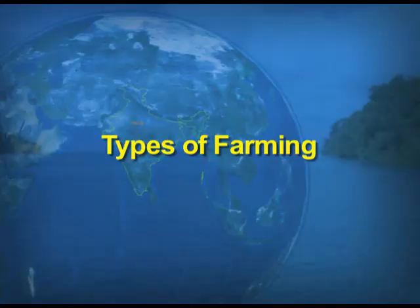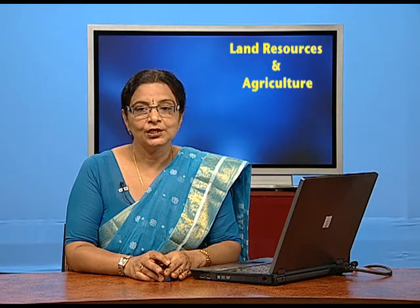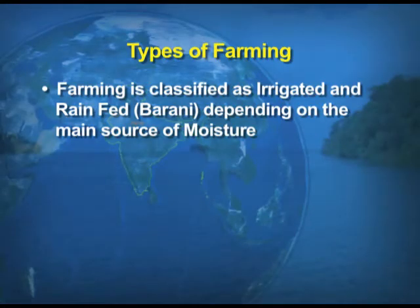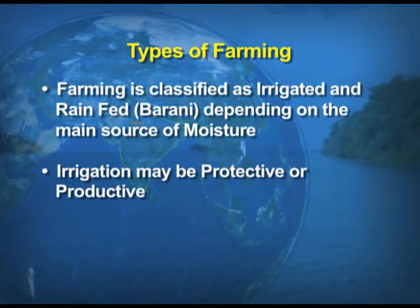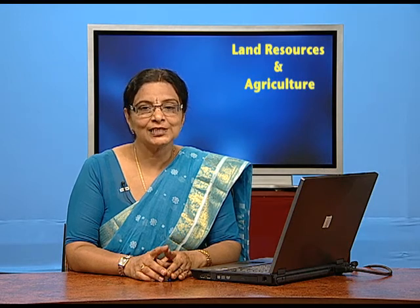Now we take up the types of farming. When we talk about types of farming, we'll be discussing those based on irrigation methods, because in India the rainfall is not always sufficient and we have to depend upon irrigation. So farming is classified as irrigated and rain-fed. Rain-fed means depending upon rainfall as the main source of moisture. Irrigation can be either protective or productive — let's discuss what these terms mean.